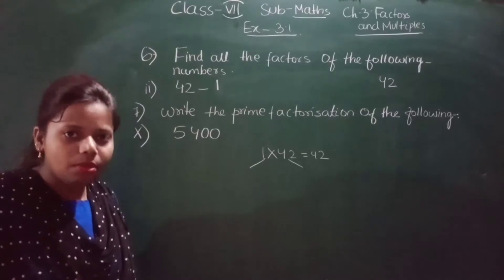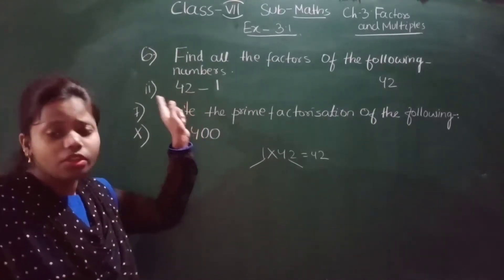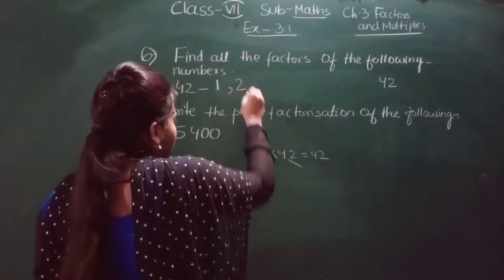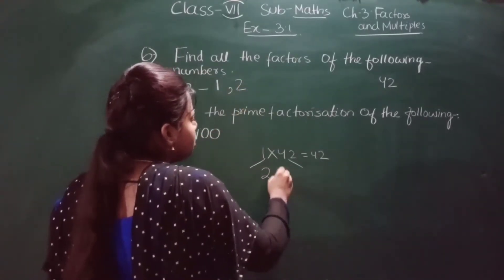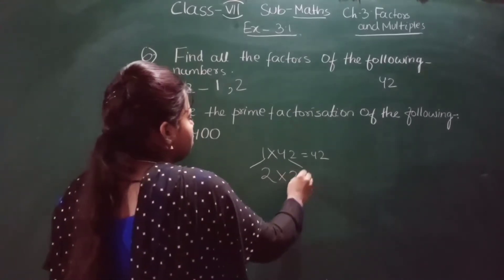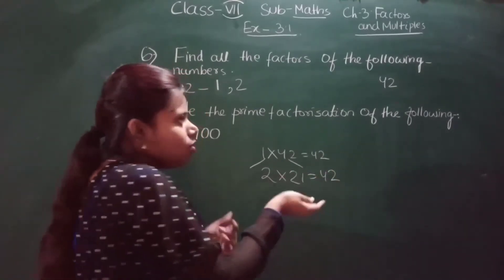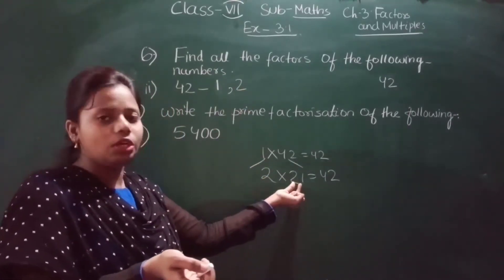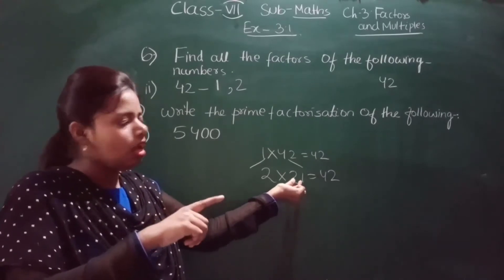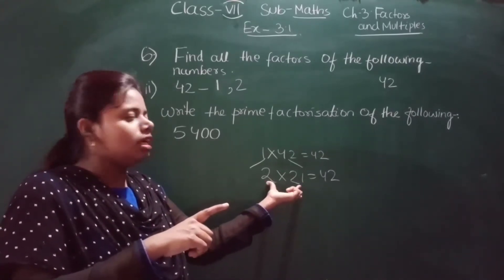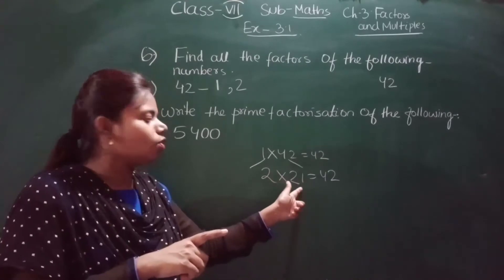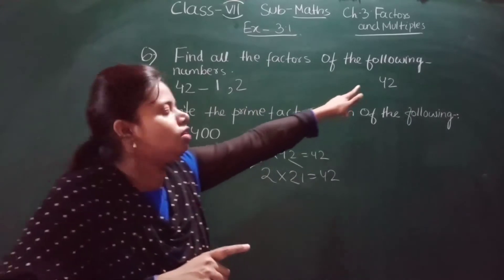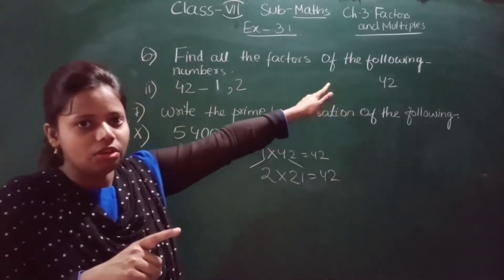Now, will 42 come in the 2 times table? Yes, because it is an even number. So 2 is also a factor. 2 times 21 equals 42, which means both 2 and 21 are factors. I have already taught you this — the multiplicand and the multiplier are both factors. So I write 2 on the left side and 21 on the right side.